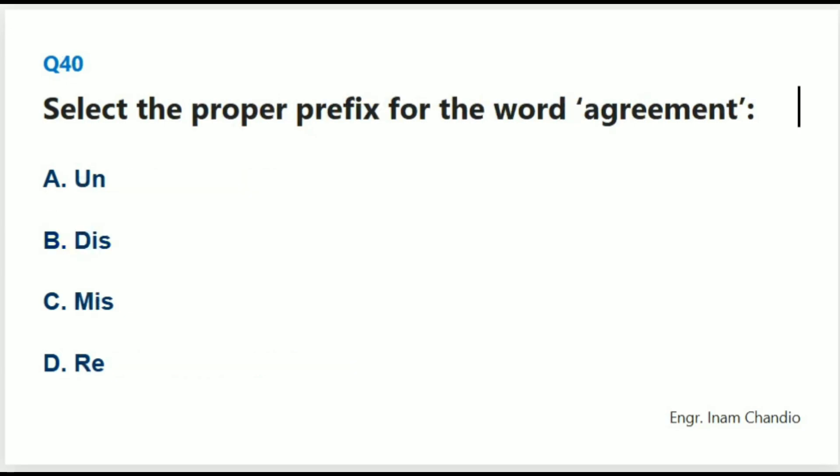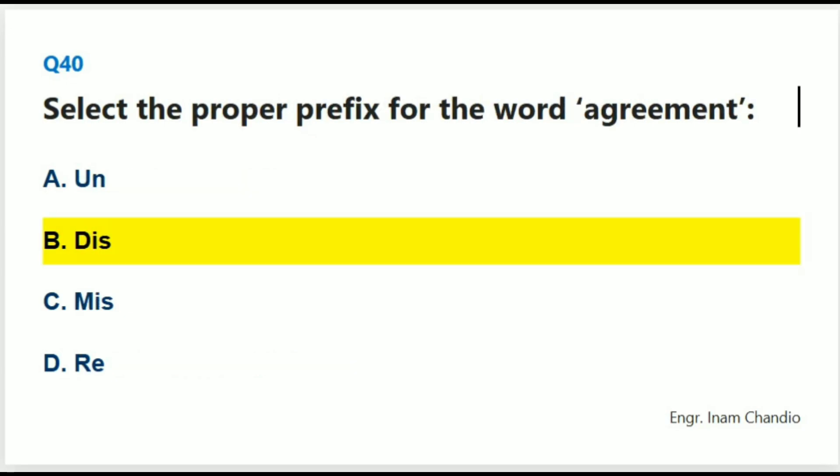Select the proper prefix for the word 'agreement.' The correct answer is B. Dis.